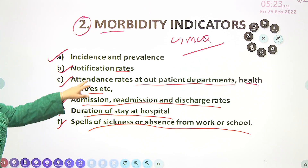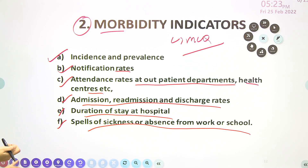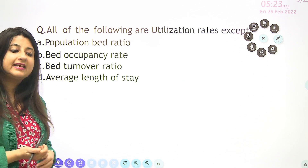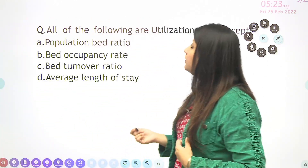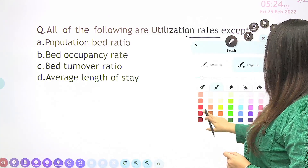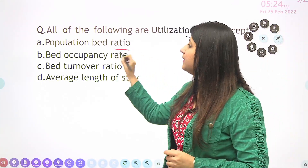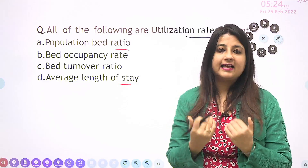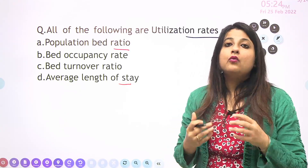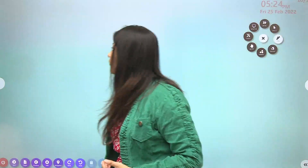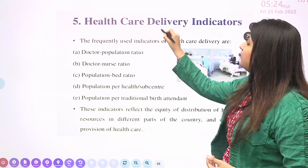Other morbidity indicators include notification rate, attendance rate, and so on. Now let's move to utilization indicators and healthcare delivery indicators. Here's a question: all of the following are utilization rates except — population-bed ratio, bed occupancy rate, bed turnover ratio, or average length of stay. What is your answer?